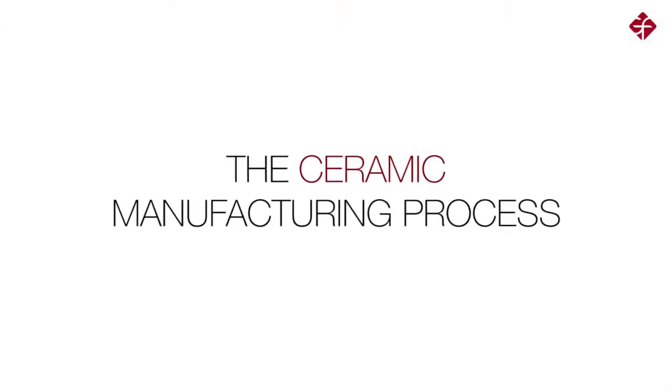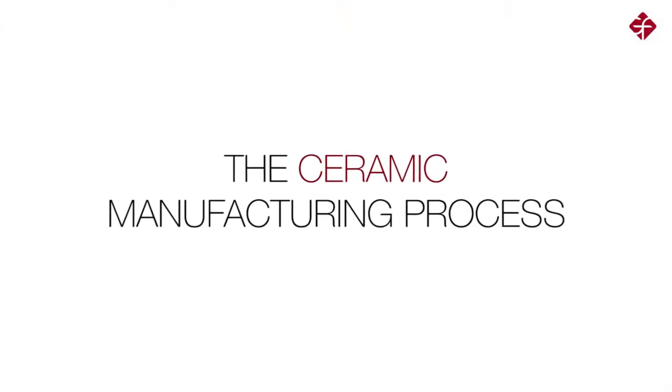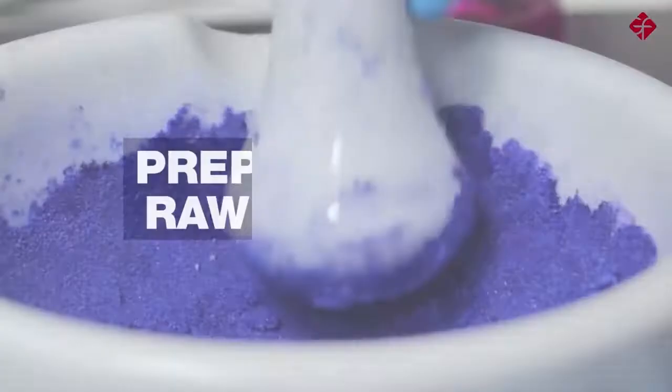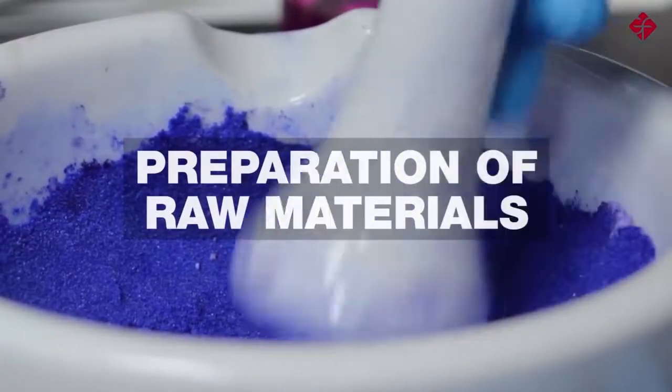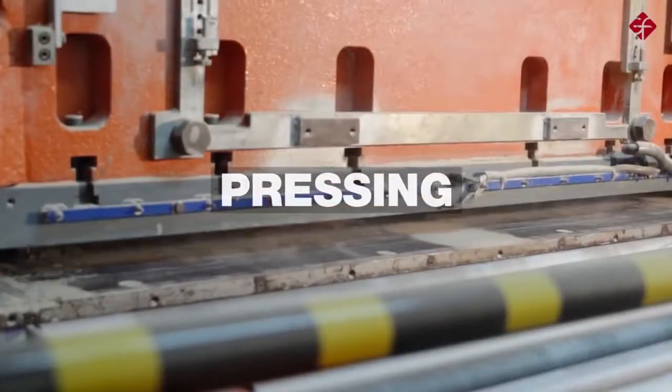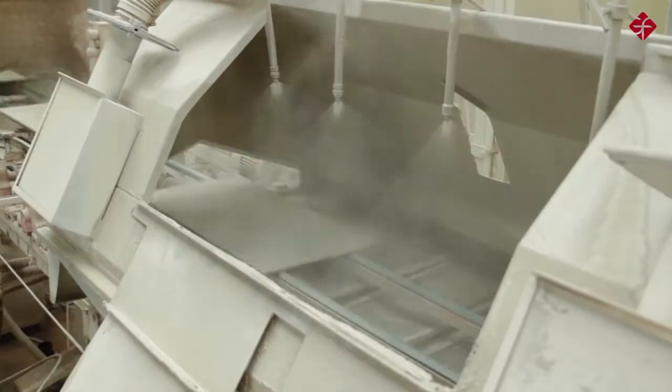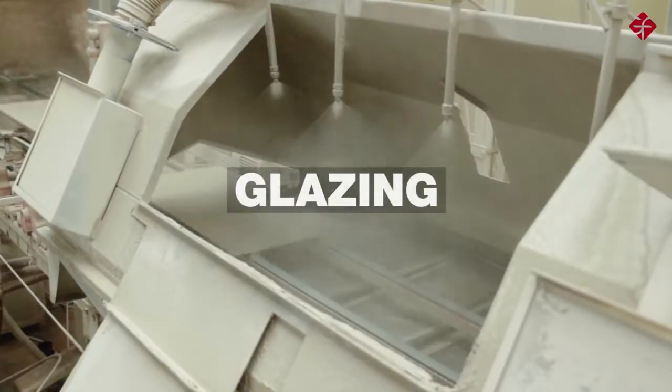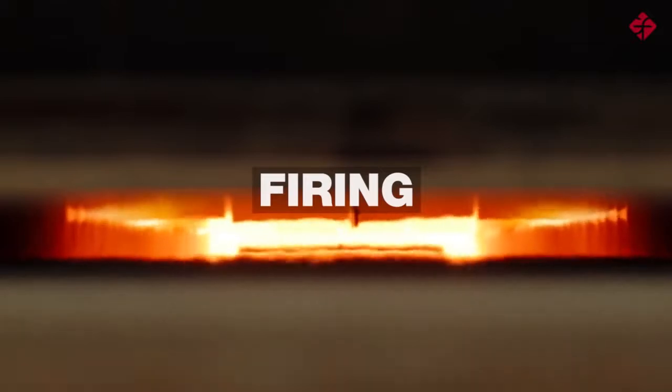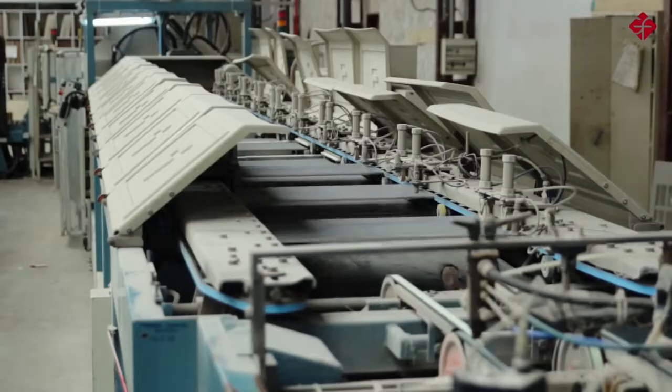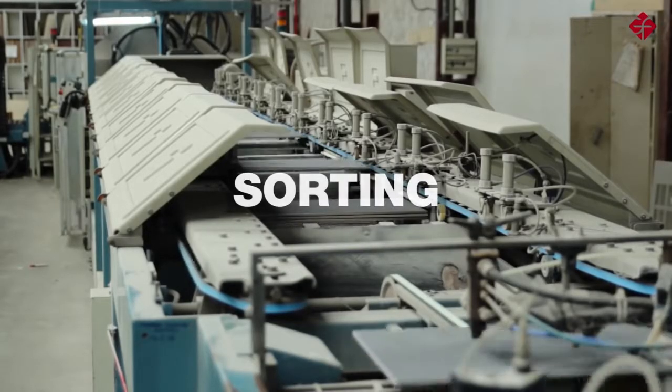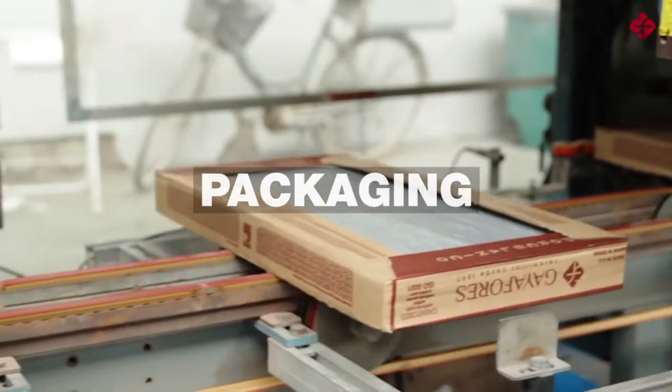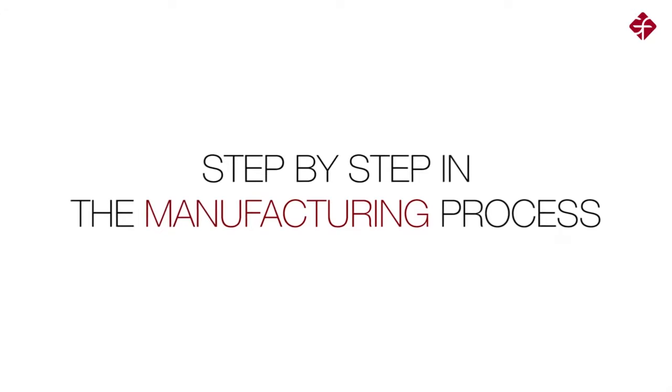The ceramic manufacturing process consists of the following stages: preparation of raw materials, pressing, glazing, firing, sorting, packaging. Step by step in the manufacturing process.